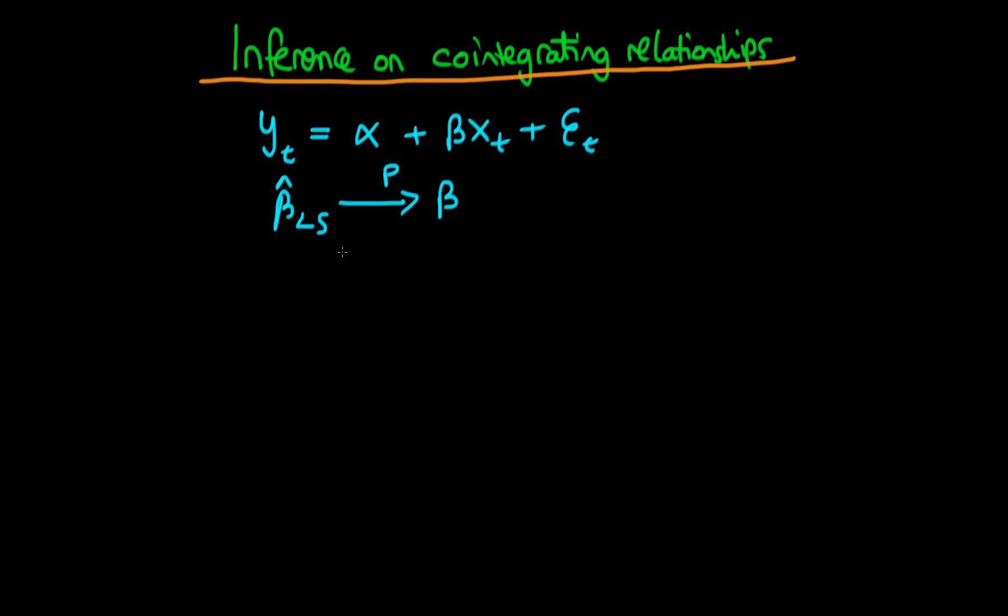So supposing that there is some sort of long-run relationship between y and x, the least squares estimator turns out to be consistent, so that's a good thing. So you might think that we can just do inference using the normal t statistic for the estimated value of beta. Well it turns out we can't because of the fact that xt is I(1) and yt itself is I(1).